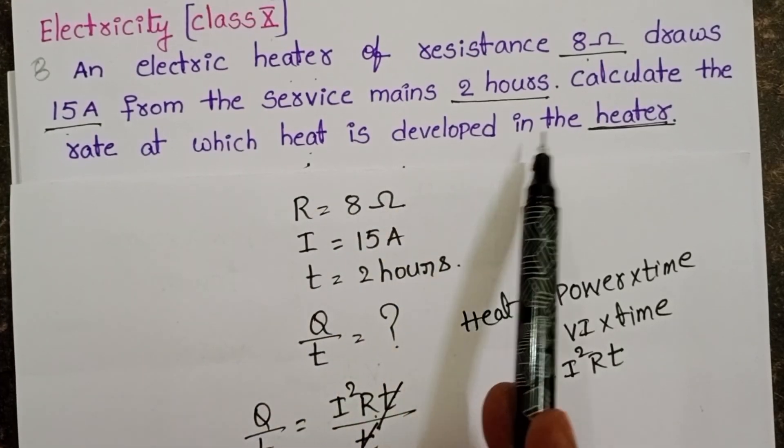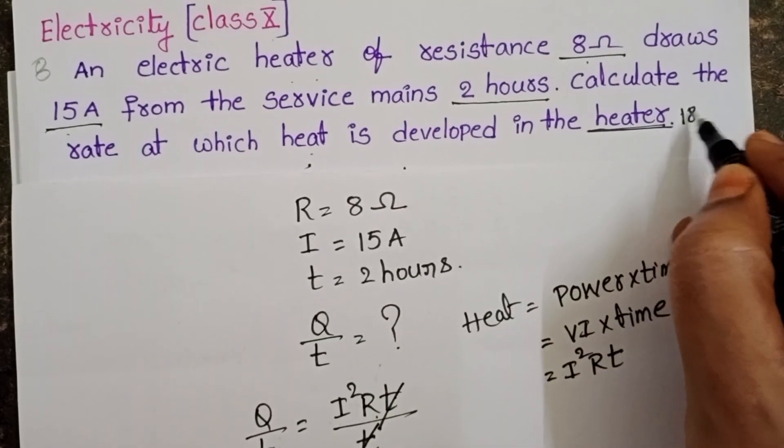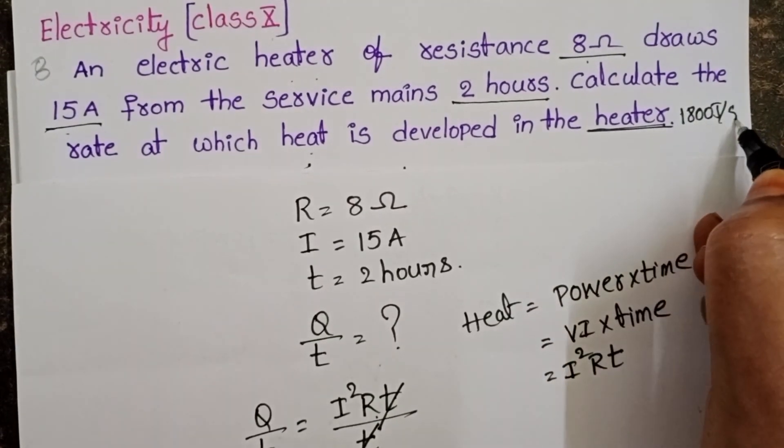Rate of heat developed in the heater is 1800 joule per second.